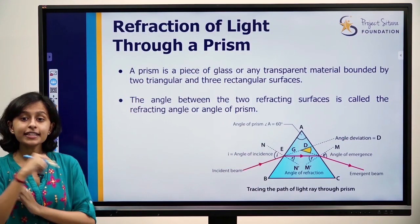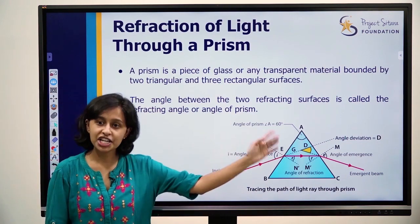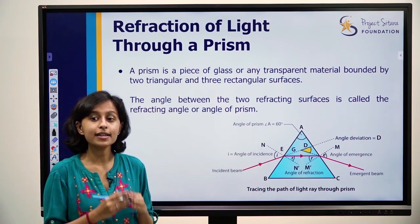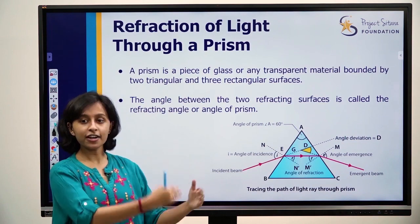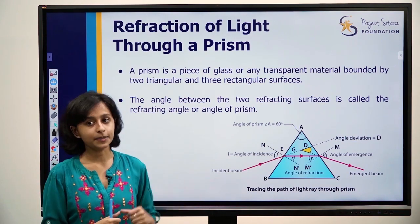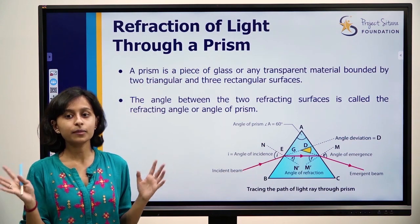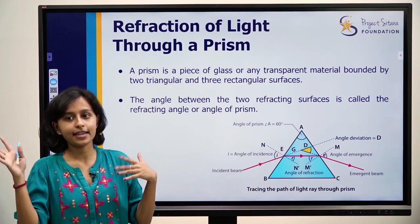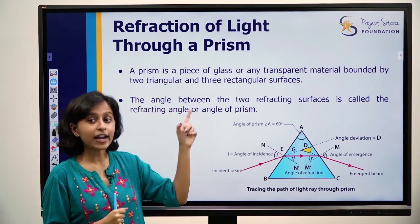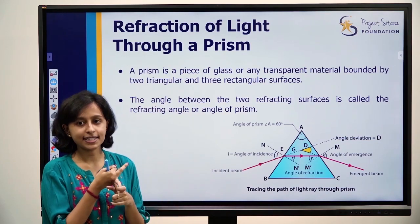Now in the previous chapter we learnt about refraction of light. Refraction of light is the bending of light when it travels from one medium to another medium. We learnt about glass, air, and so many things, and we learnt about refraction of light through glass slab and various lenses.